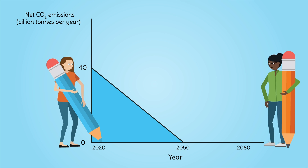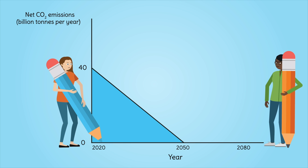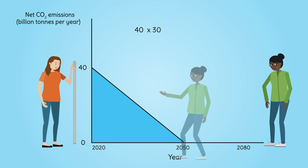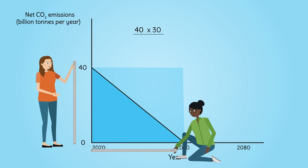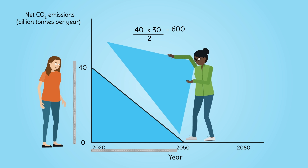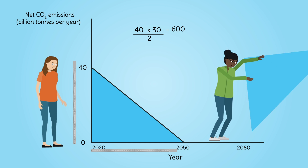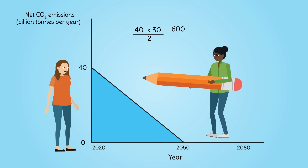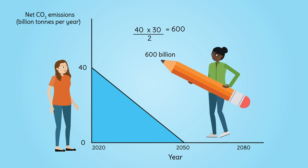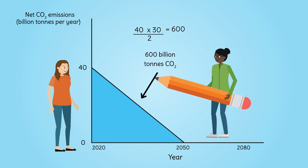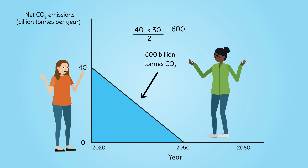It's all about our total carbon budget, because that's what determines climate change. The area of this blue triangle can be calculated to work out our carbon budget. For a rectangle, length multiplied by width equals area. For our triangle, you've simply got to halve it. This reveals our global carbon budget is around 600 billion additional tons of CO2 for a 50% chance of staying below 1.5 degrees of warming.